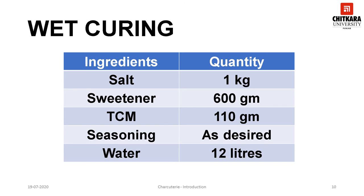This slide shows a formula for preparing a wet curing mix for meat, which comprises salt, sweetener, TCM, seasoning, and water. To get a good quality cured product, one needs to adhere to the quantities as given in the table.